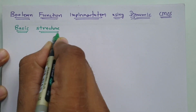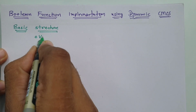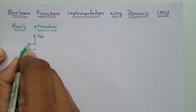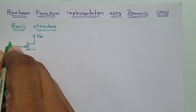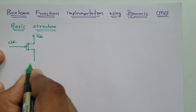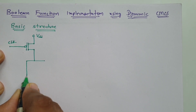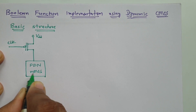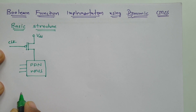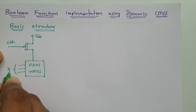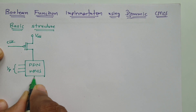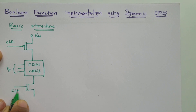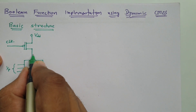In its basic structure, we have a VDD supply. With the VDD supply we have a gated clock PMOS. After that, in dynamic CMOS there is a pull-down network, and the pull-down network is made up of NMOS. There can be many inputs as per the Boolean function. After that there will be a gated clock NMOS, then we have ground, and we take the output from this terminal.